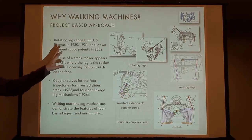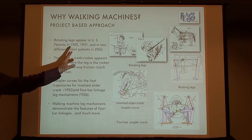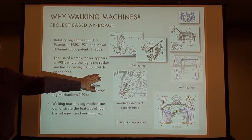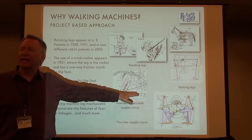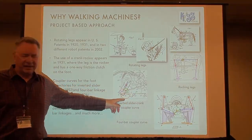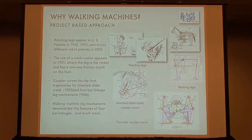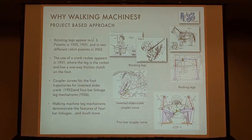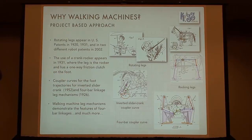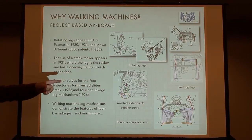I went back and looked at walking machines, and it's kind of amazing — these things go way back in patents and the patent literature, and you can just see all your favorite mechanisms. This is an inverted slider crank, and the animation you see is generated with GeoGebra. And here's another walking machine — just a crank rocker. The rocker goes back and forth and scoots along the ground because it's got a little one-way clutch in the foot.